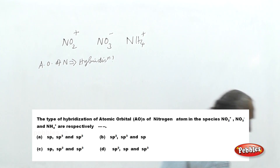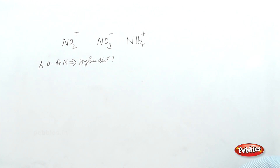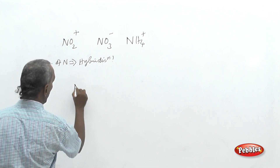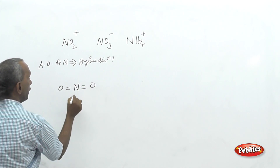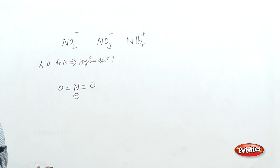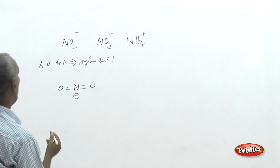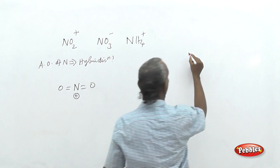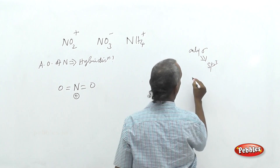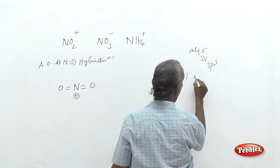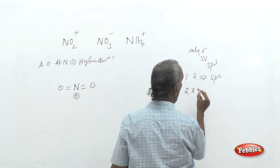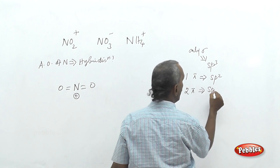All three are nitrogen-containing ionic or cationic species. For NO₂⁺, the structure shows nitrogen with two double bonds to oxygen. Only single bonds give SP3 hybridization; one pi bond gives SP2; two pi bonds or a triple bond gives SP hybridization. This has been illustrated previously with alkanes (SP3), alkenes (SP2), and alkynes (SP) for carbon.